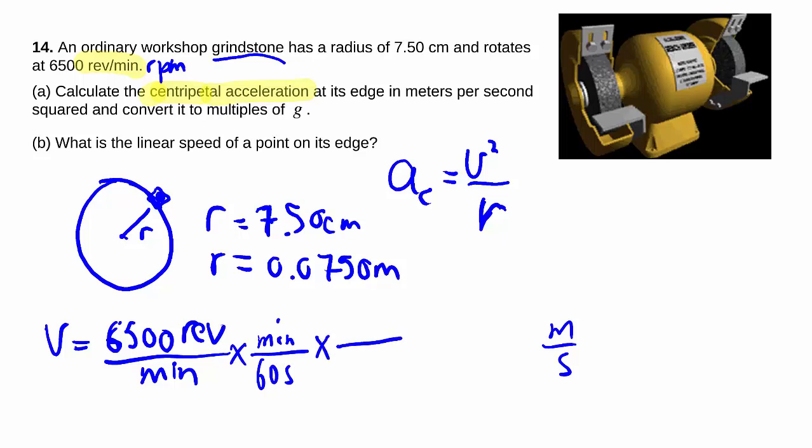The new thing here is revolution. One revolution is as you go all the way around a circle, how far did you travel? So that's the circumference, which is 2 pi r.